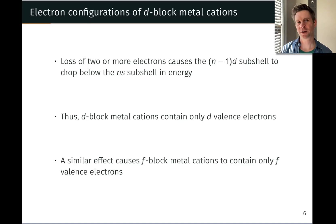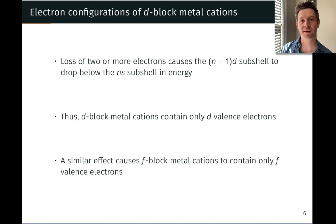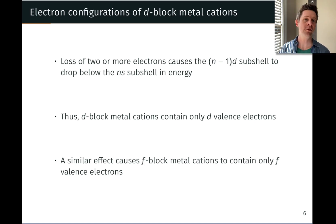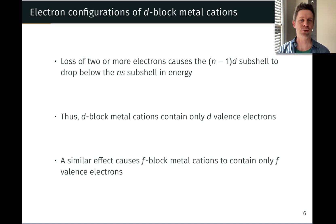The electron configurations of the transition metals and their cations give us insight into properties. We can think about things like the shell number to talk about atomic size, and this is why electron configuration is important in general — important for the main group as well.